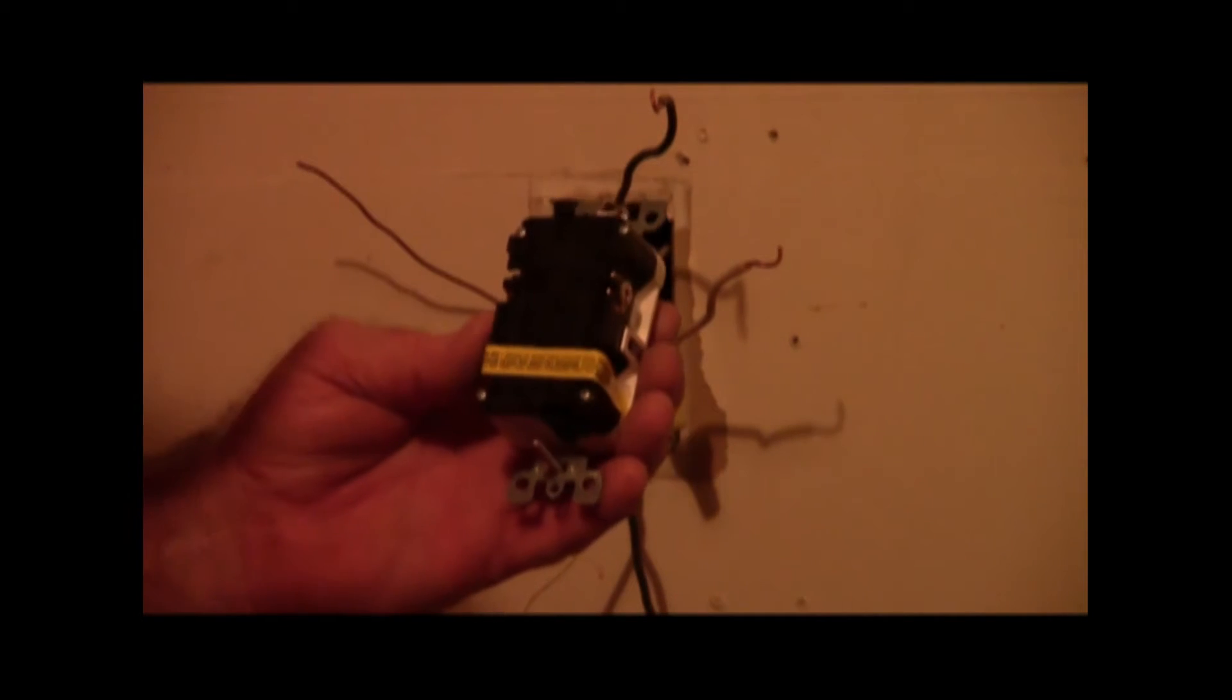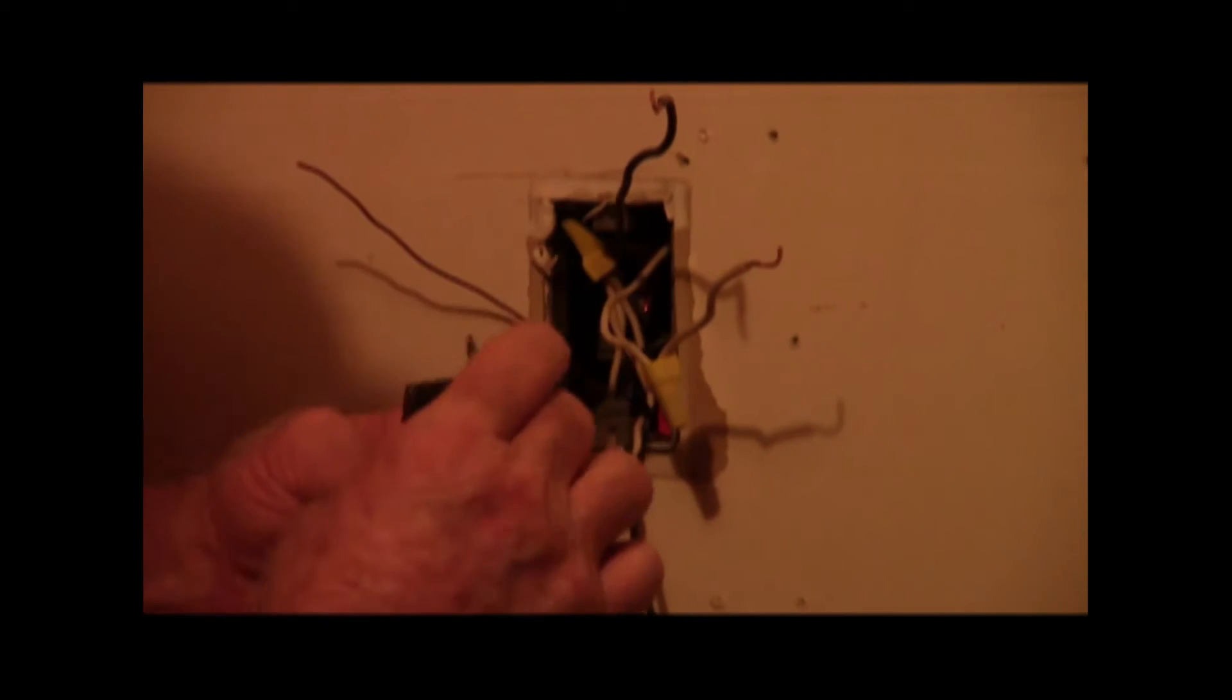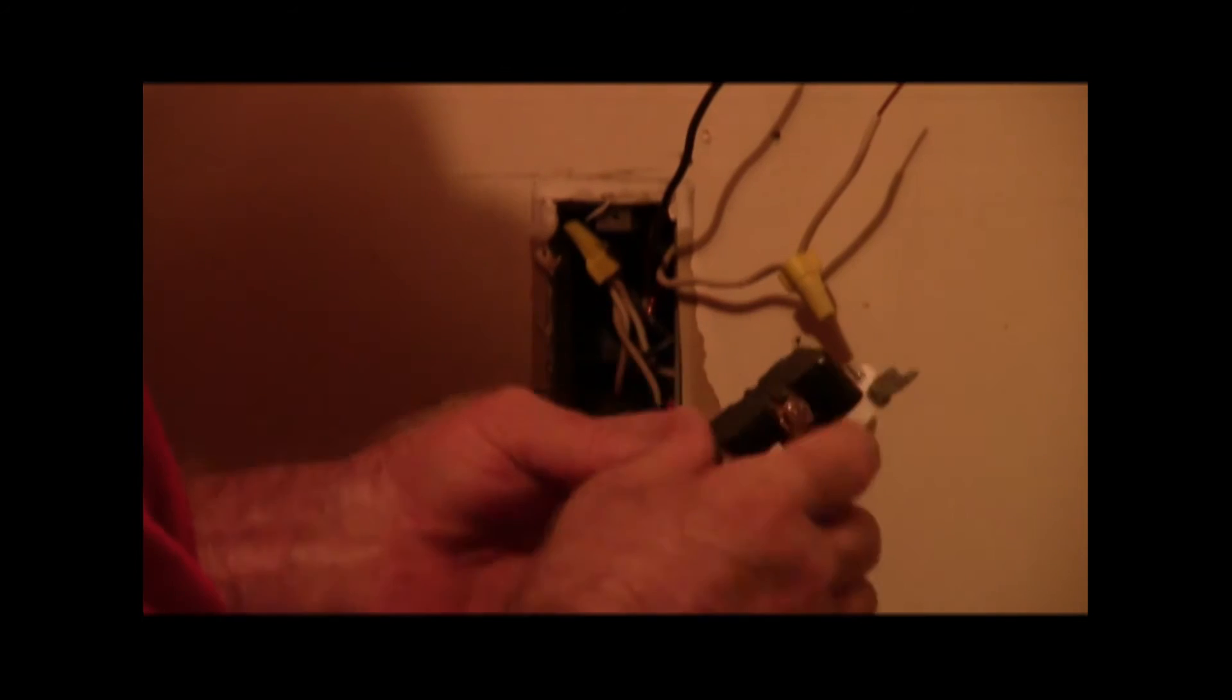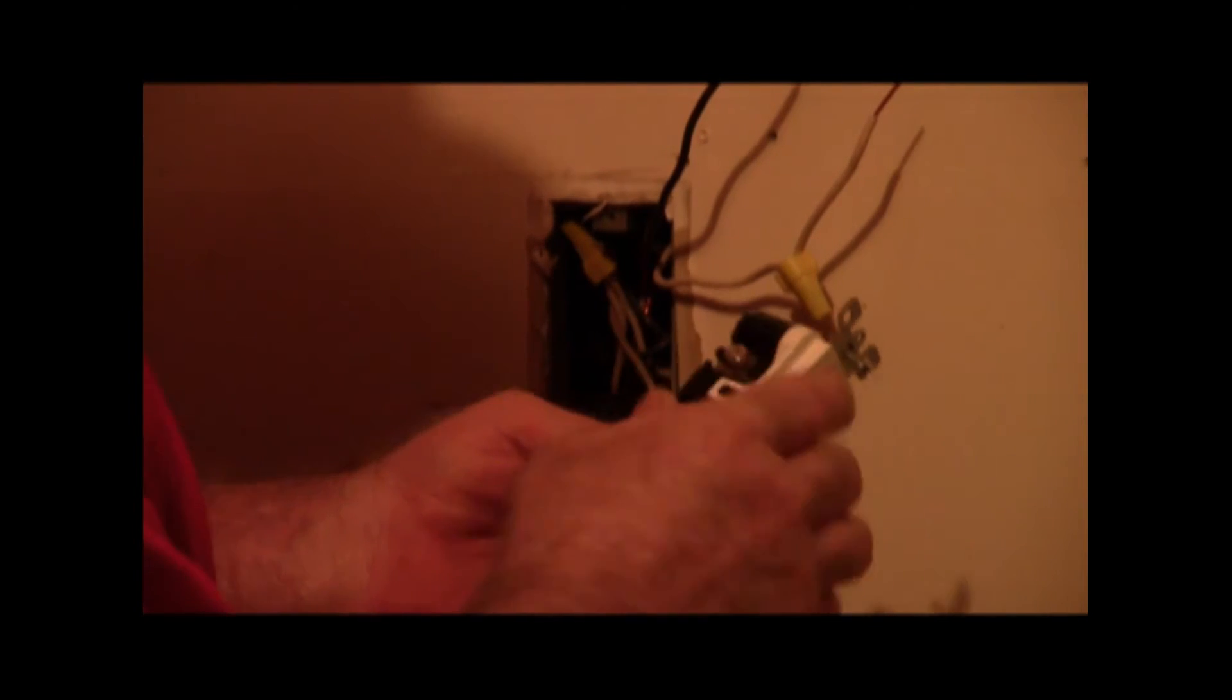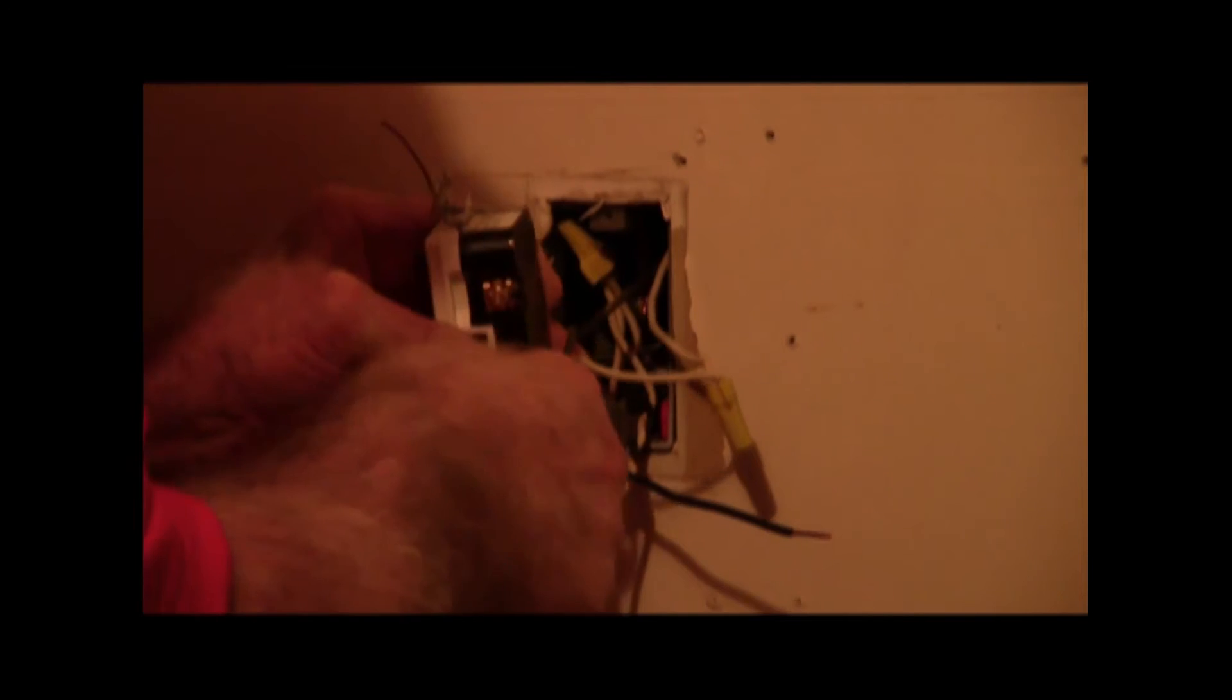Now on the back of the GFI it'll clearly state line and load. I like to hook up my loads first because it reduces the risk of shock. Hots always go on the brass. Neutrals always go on the white screws. Should always finish these off by hand tightening them with a screwdriver.